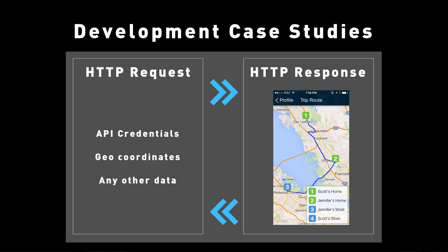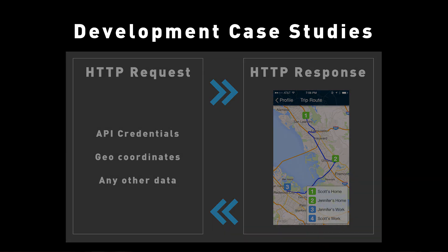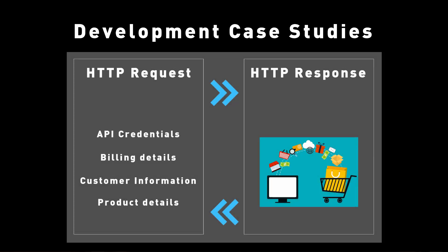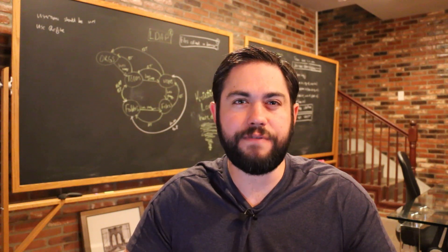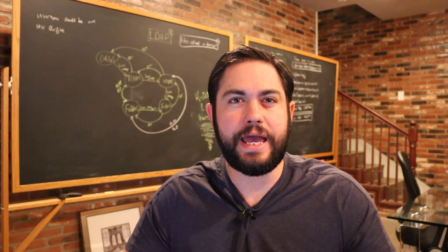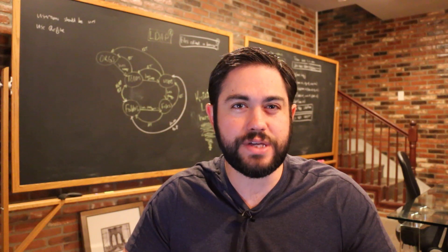Some development case studies: in a mapping application, you'd send your API keys to Google along with the geo coordinates and be sent back a response containing mapping data, so your users can see their location on an iPhone app. For a shopping application, you'd send billing information to the Stripe API and receive a response back that lets your app know if the payment was made successfully or not. Hopefully this gives you a high-level understanding of how HTTP works and most importantly how you can use it as a developer.